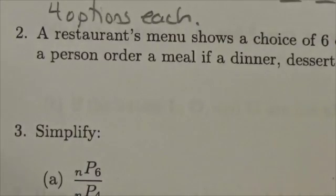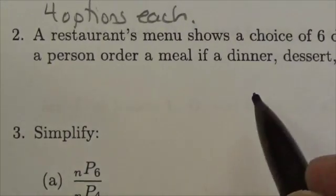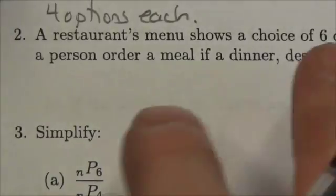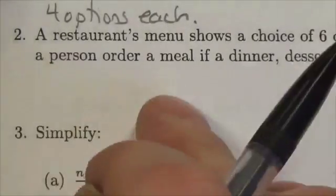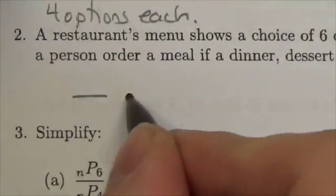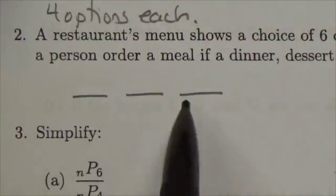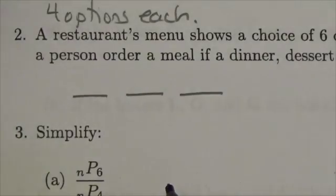So this becomes a fundamental counting principle problem. The different tasks we have to accomplish are ordering the dinner, dessert, and beverage. Each one of these spaces represents a task that needs to be accomplished.